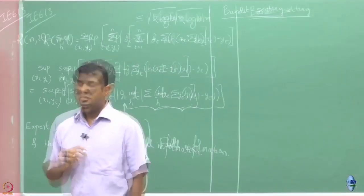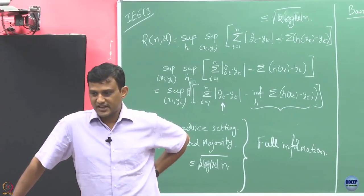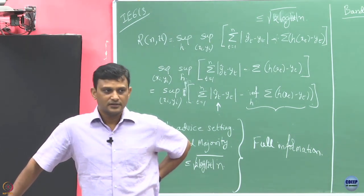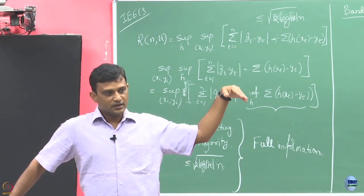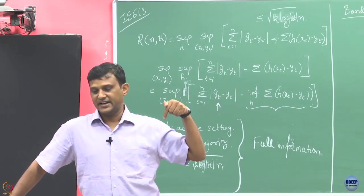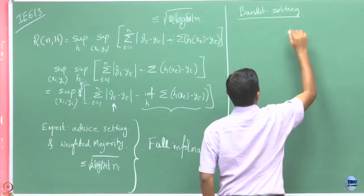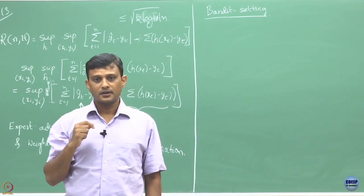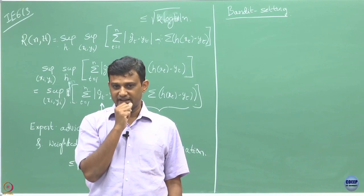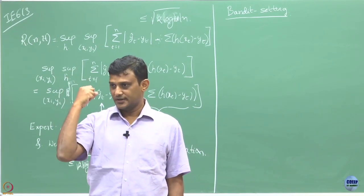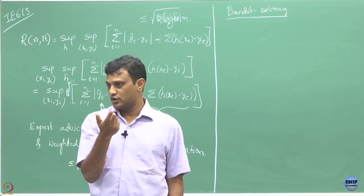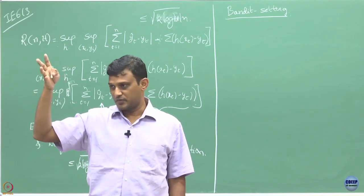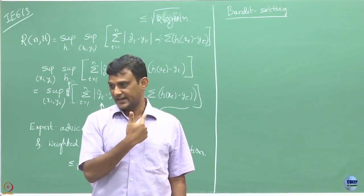Can somebody give an example of full information setting and the bandit setting? In the bandit setting, think of a casino: you go and play one machine and get to see whether you lose or win with that machine. In that round you do not know what the other machines would have given you — the ones you have not played. You only get to see the one which you played. That is exactly what we call the bandit setting.